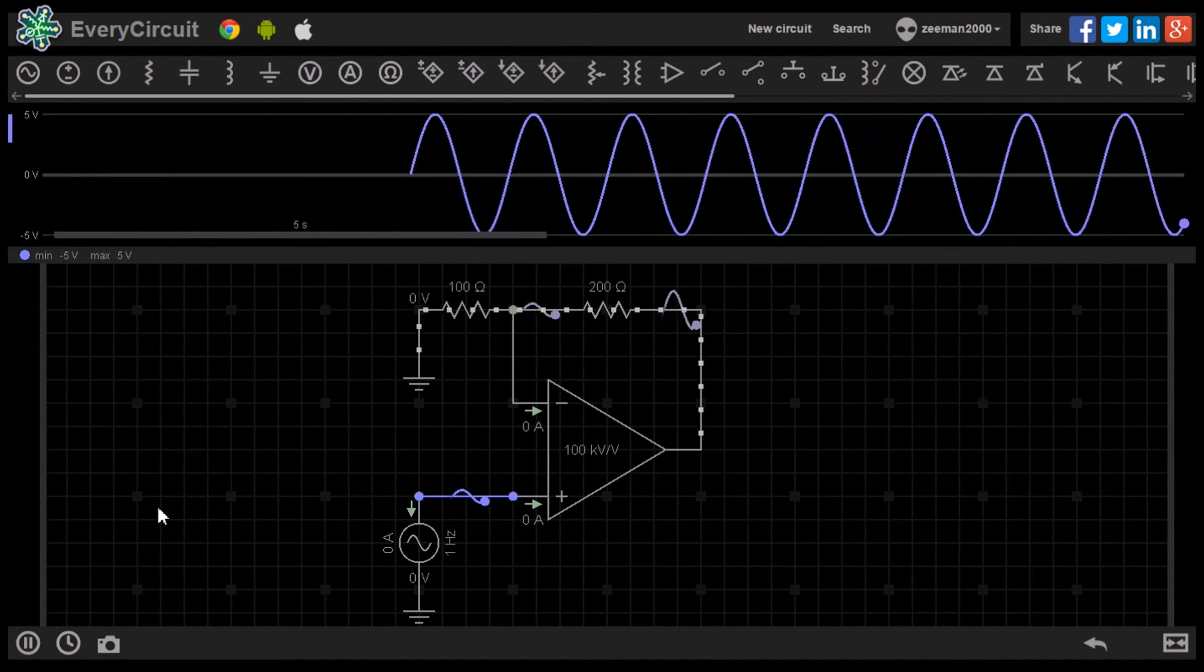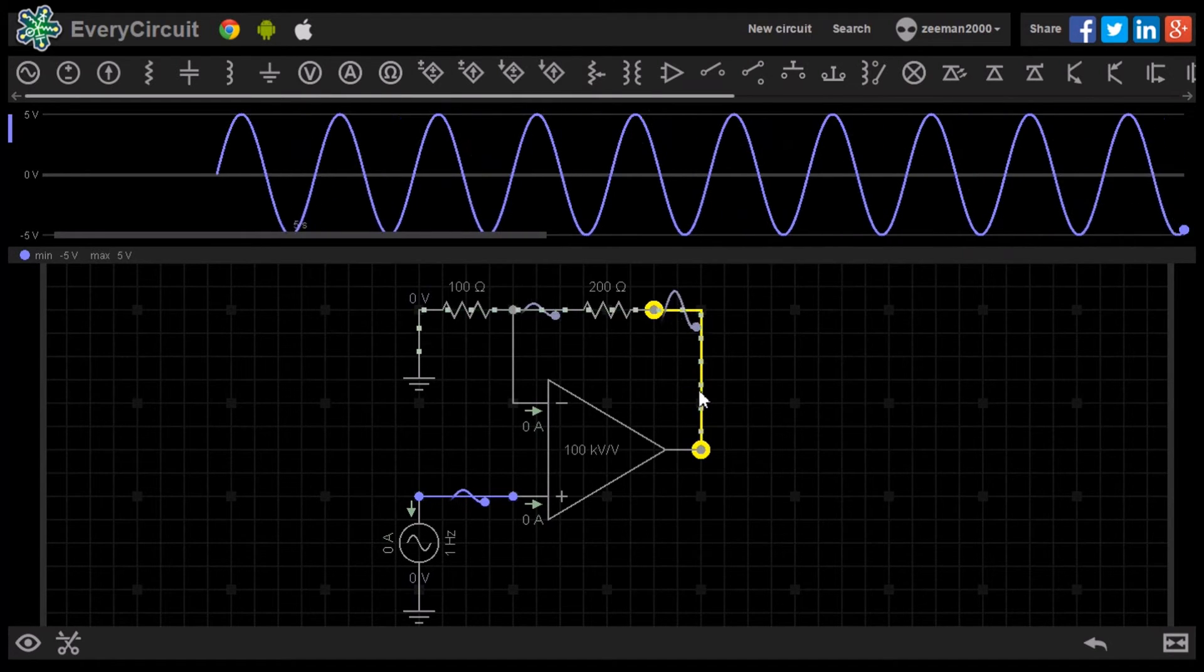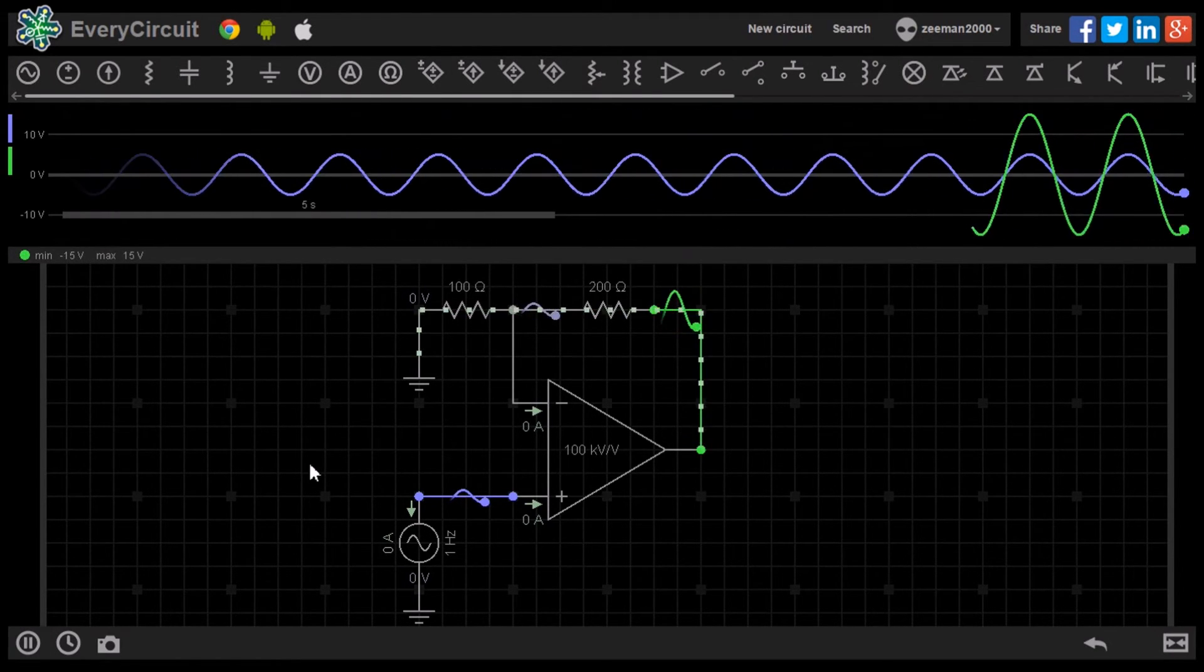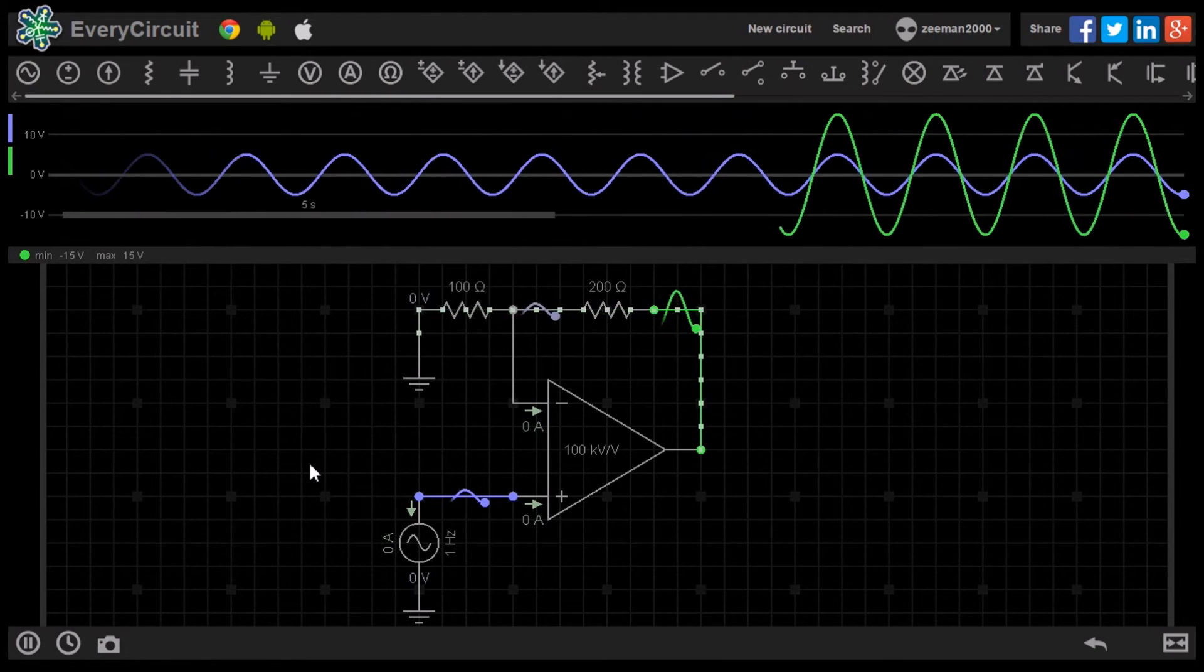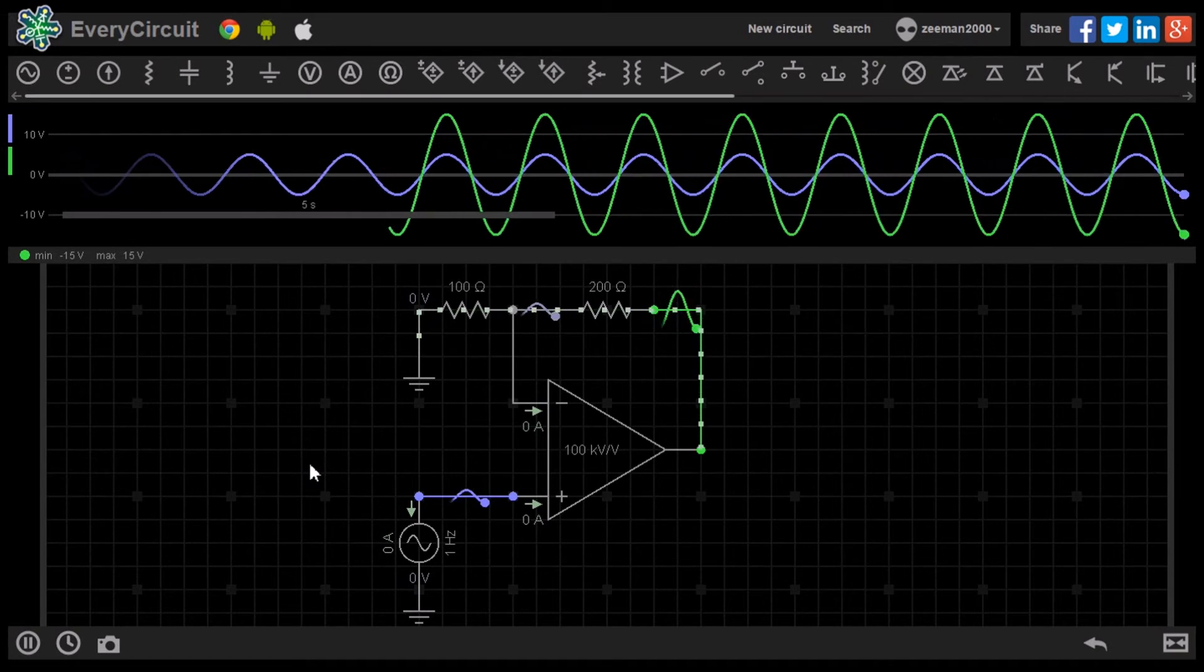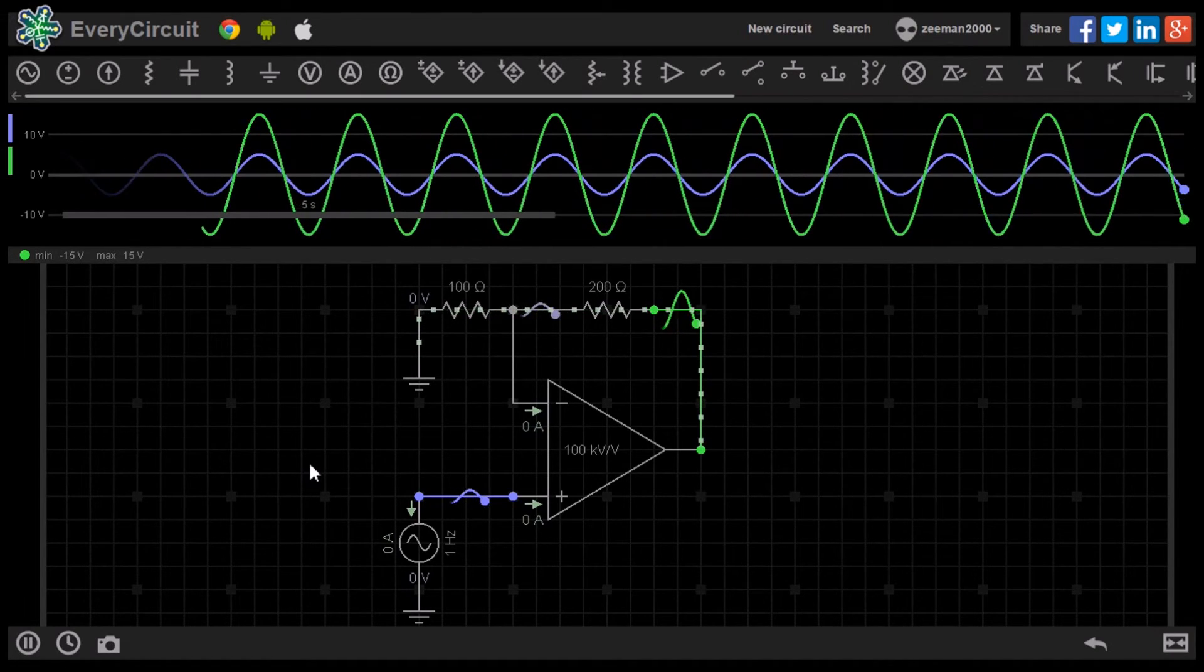We can now highlight the output and see the increase in the voltage. The op-amp's output is producing a 30 volt peak-to-peak sine wave as we calculated earlier.